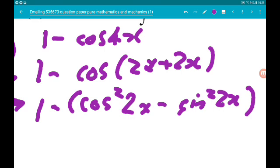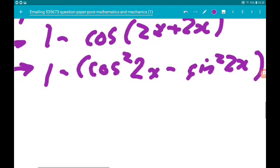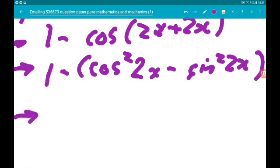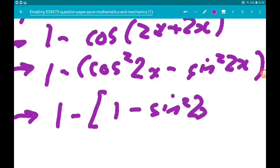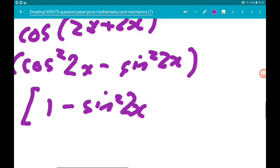or we need everything to be in terms of sin of 2x. So we know that sin squared add cos squared is equal to 1, so cos squared is 1 minus sin squared 2x. So we get 1 minus, and then in the brackets, cos squared 2x is 1 minus sin squared 2x, and then we got the other minus sin squared 2x.